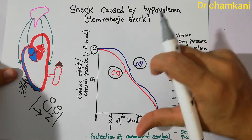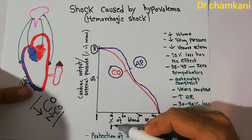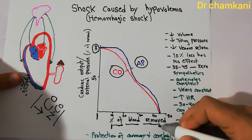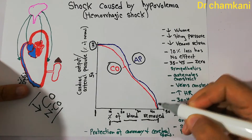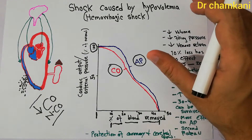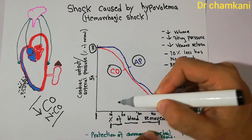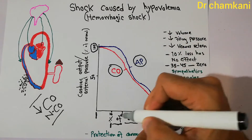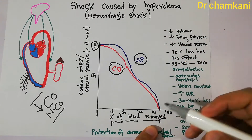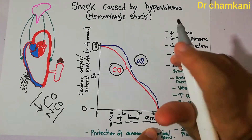As blood loss increases from 20% to 30% to 40-45%, both cardiac output and arterial pressure fall steadily. At around 40 to 45% blood loss, both cardiac output and arterial pressure fall to zero, and the patient will die at this point. So initially at 10% blood loss almost no change occurs, but with increasing hemorrhage they steadily decline until reaching zero at around 40-45%.